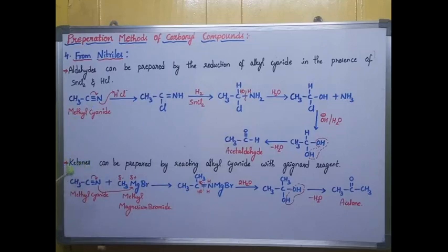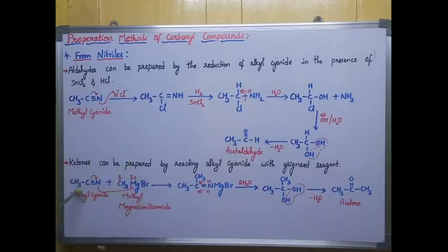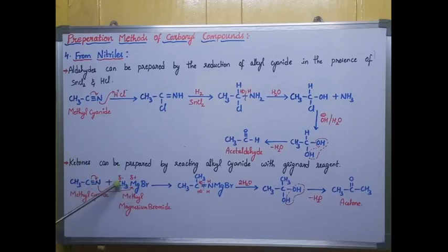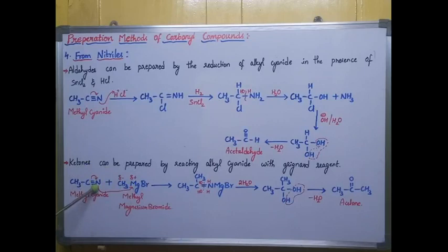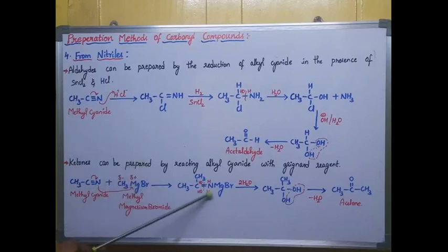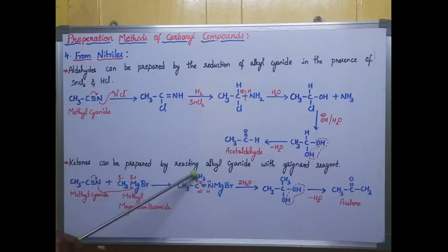For the preparation of ketones, I react methyl cyanide with a Grignard reagent — methyl magnesium bromide (CH3MgBr). I break the triple bond: nitrogen gets a negative charge and carbon gets a positive charge. In methyl magnesium bromide, CH3 carries a partial negative charge and Mg carries a partial positive charge. The negatively charged nitrogen attracts the positively charged MgBr, forming an Mg–Br bond, and carbon attracts the CH3 group forming a new bond.